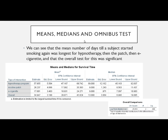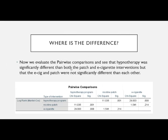We also get an omnibus test and means and medians. The mean number of weeks until the subject started smoking was 57 weeks for hypnotherapy, 26 weeks for the nicotine patch, and 17 weeks for e-cigarettes. The overall comparisons produce a large chi-square value, indicating that at least one treatment is significantly different. Then looking at the pairwise comparisons: hypnotherapy is significantly different from the nicotine patch (chi-square = 11), and hypnotherapy is even more significantly different from the e-cigarette. However, the nicotine patch is not significantly different from the e-cigarette — so neither patch nor e-cigarette are particularly effective compared to hypnotherapy.